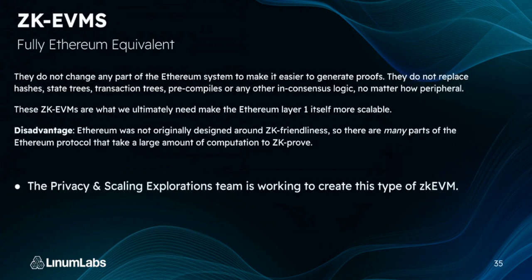Fully Ethereum equivalent ZK-EVMs do not change any part of the Ethereum system to make proof generation easier — they do not replace hashes, state trees, transaction trees, precompiles, or any other in-consensus logic. These ZK-EVMs are what we ultimately need to make Ethereum layer one itself more scalable. However, Ethereum was not originally designed around ZK-friendliness, so many parts take large amounts of computation to prove. The privacy and scaling explorations team is working to create this type of ZK-EVM, and if successful, layer one will become scalable.